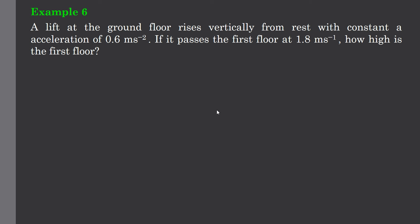And I think this is our final example. A lift at the ground floor rises vertically from rest with a constant acceleration of 0.6 meters per second squared. If it passes the first floor at 1.8 meters per second, how high is the first floor?